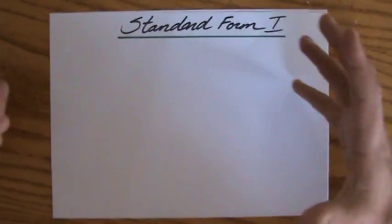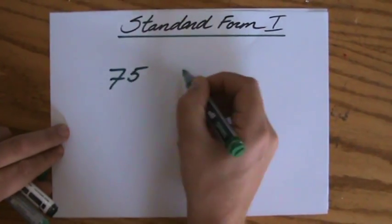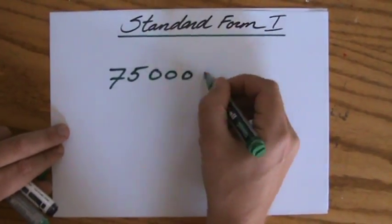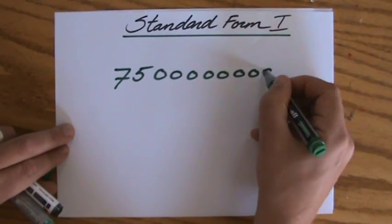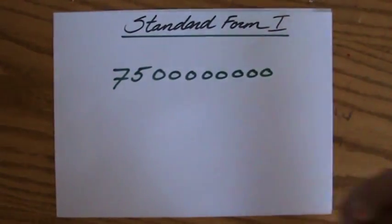But we only use the standard form really for very large or very small numbers. For instance, let's say I have this number 75 and then a few of those zeros. And just by looking at that number I just get dizzy. Because what does it say? How much is that?